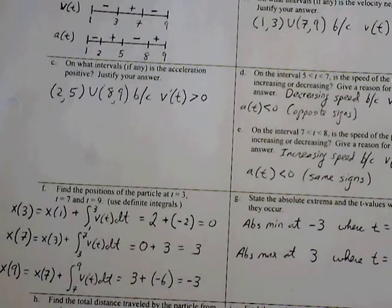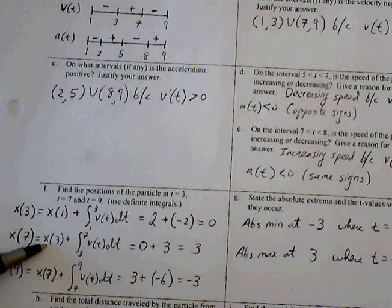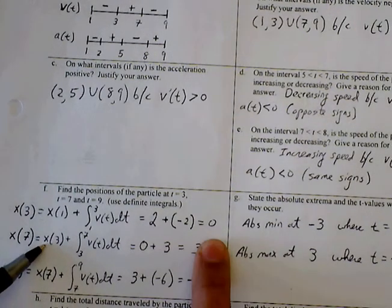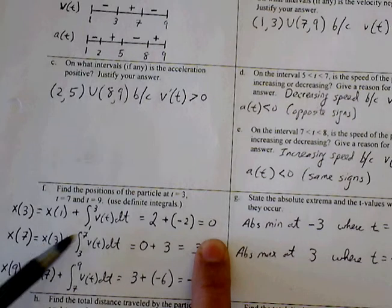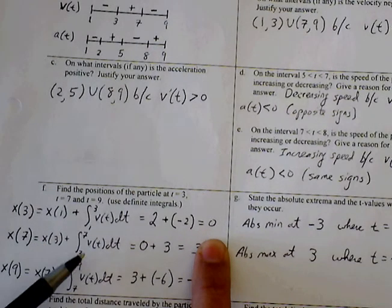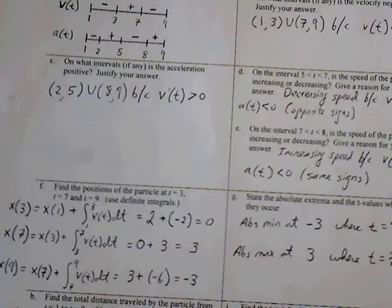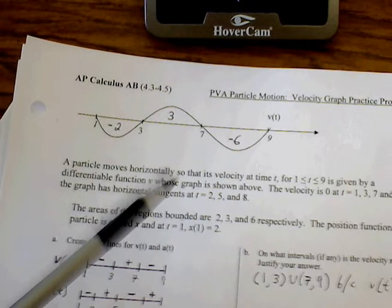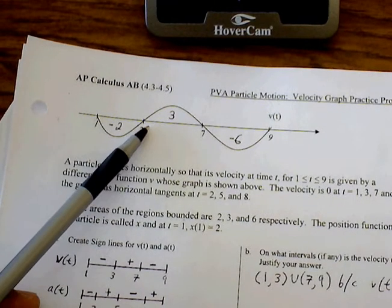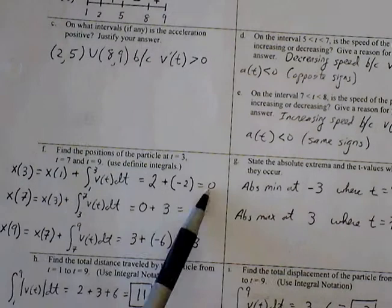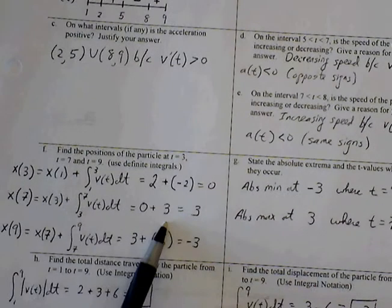If I want to find my position at 7, I left off at x of 3. So x of 3 plus the area from 3 to 7 under the v of t curve. Between 3 and 7, I will get positive 3, so I'm going to add that to x of 3. x of 3 is 0 from my previous result, 0 plus 3 equals 3.